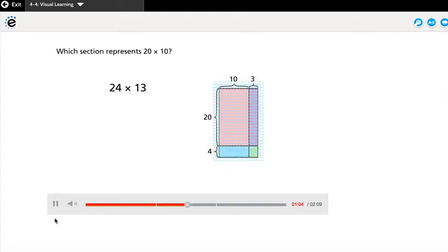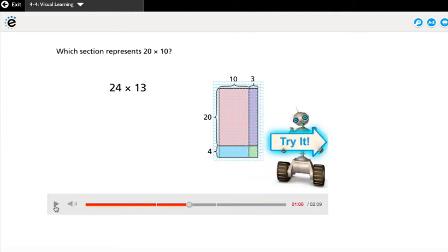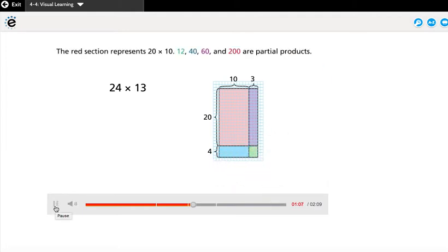Which section represents 20 times 10? The red section represents 20 times 10. 12, 40, 60, and 200 are partial products.